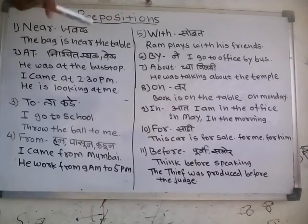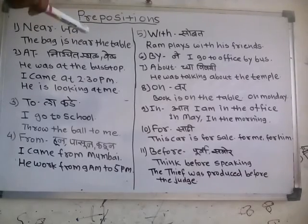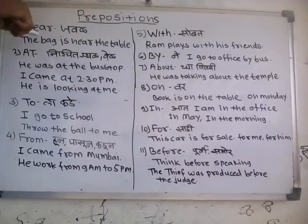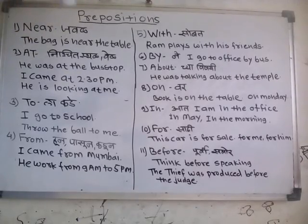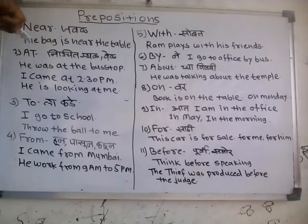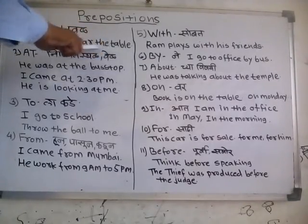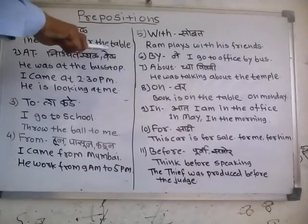I have written here the important prepositions which we use maximum time while speaking in English. First is 'near'. Near means around us. To show the proper meaning of proximity, we always use 'near'. For example: The bag is near the table — meaning the bag is around or close to the table.